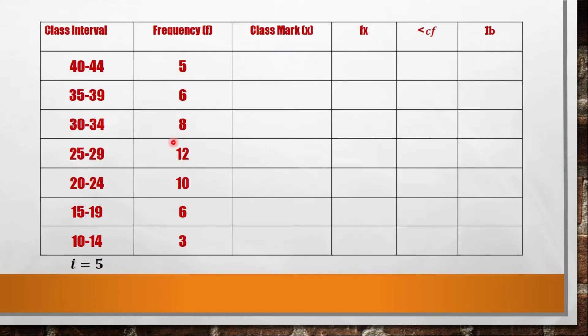For example, 25 to 29 has 25, 26, 27, 28, 29—five numbers in this interval. That's why 5 is what we put. With 40 to 44: 40, 41, 42, 43, and 44.